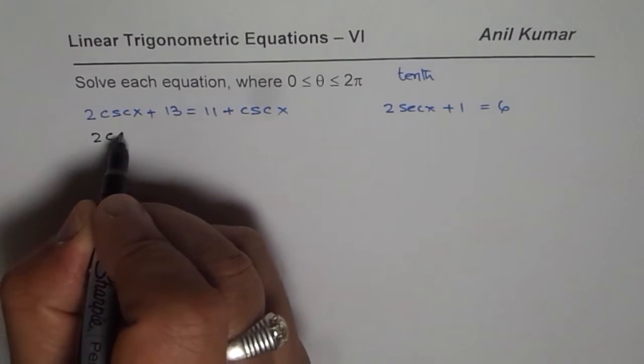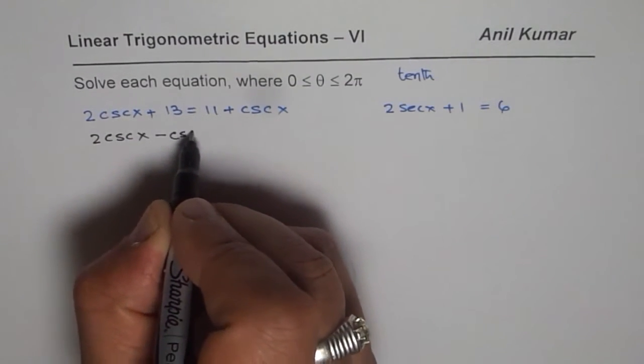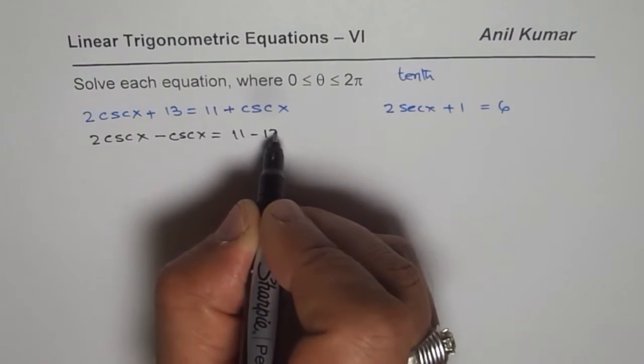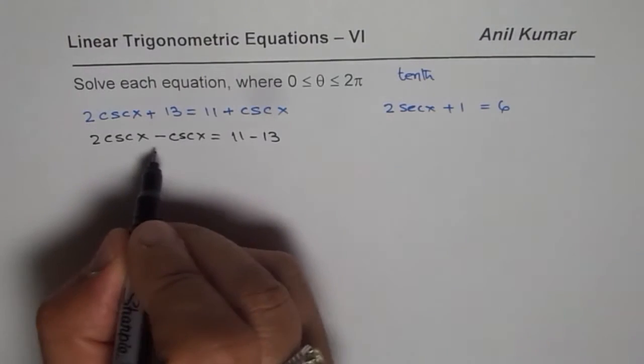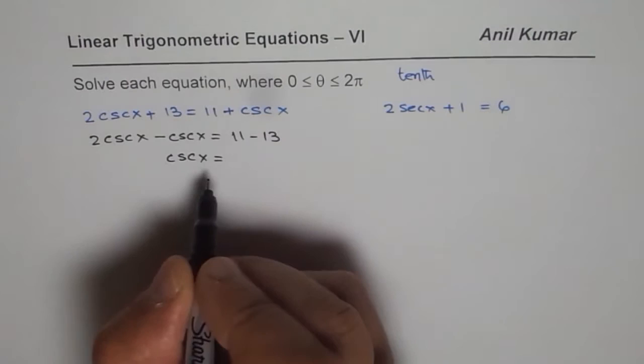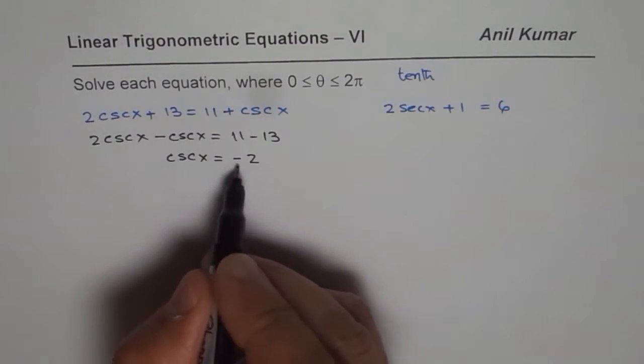We have 2csc(x). Let us bring that csc(x) to the left side. So we have csc(x) equals to the numbers on the right side, 11 minus 13, which gives us csc(x) = -2.